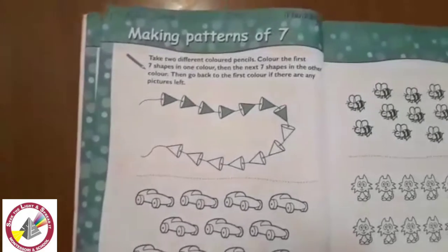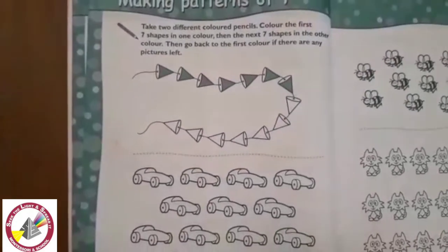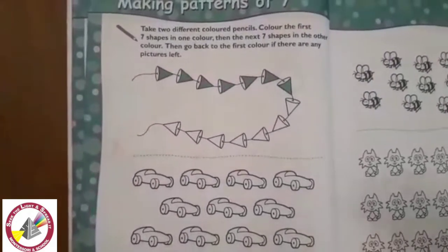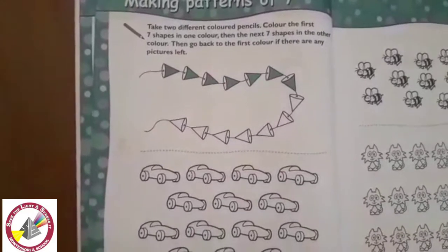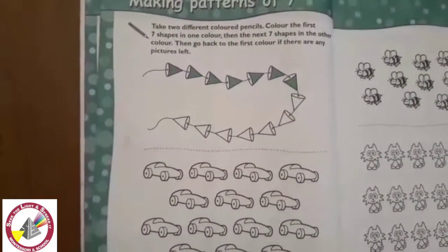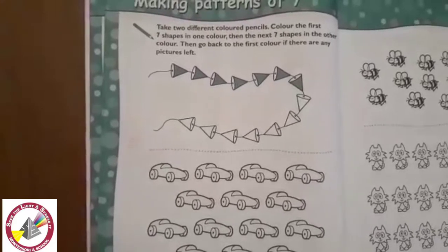So over here let's read the instructions of the book. Take two different colored pencils. Color the first seven shapes in one color, then the next seven shapes in another color. Then go back to the first color if there are any pictures left.